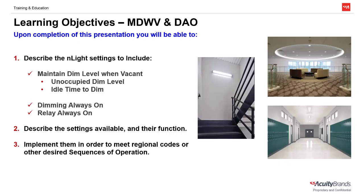There may be certain regional codes or sequences of operation that call for luminaires in certain areas of a building to remain on even when the space is unoccupied. Areas like hallways, stairwells, and entryways may require a specific light level that needs to be maintained for egress purposes and does not follow normal occupancy or vacancy behaviors.